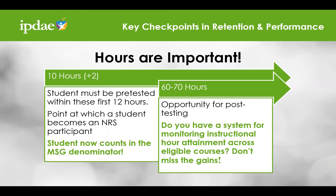The next key checkpoint comes in at 60 to 70 hours of instruction. This is usually the recommended number of instructional hours required by state-approved assessments, such as TABE, TABE Class E, BEST, and CASAS, for measuring the learning gains of a continuous student. Ask yourself: what procedures do you have in place to post-test students at the recommended hours of instruction?